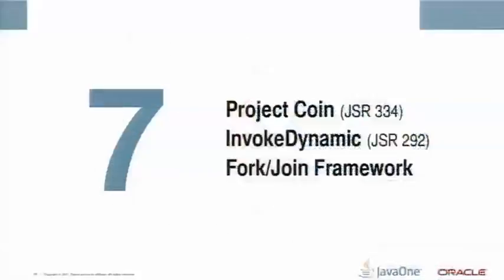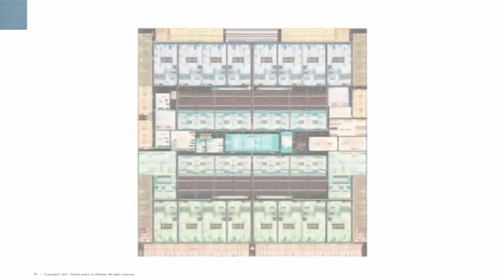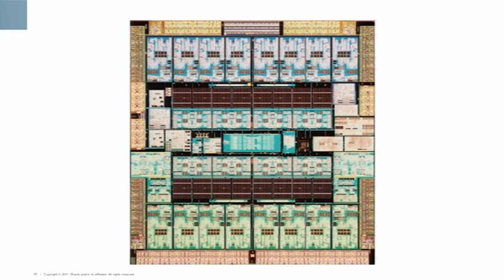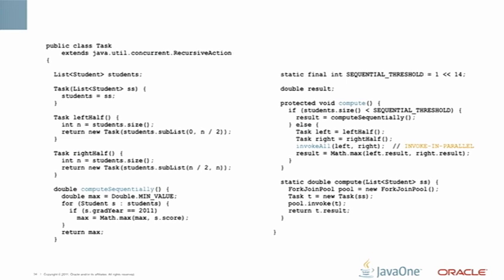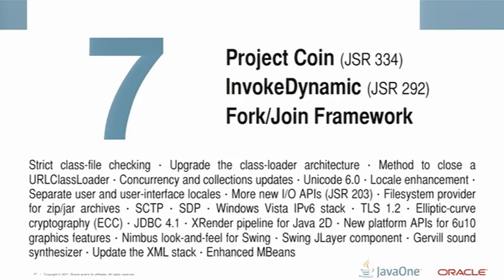The ForkJoin framework is motivated by the inevitable rise of multicore processors. The real power of the ForkJoin framework is that it takes care of all the parallelism and synchronization for you. All you have to be able to do is specify how to take a subtask and divide it into two pieces, how to run a subtask sequentially, and how to combine the results of subtasks as they finish and go up the tree.